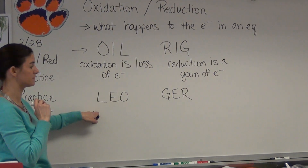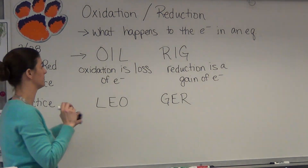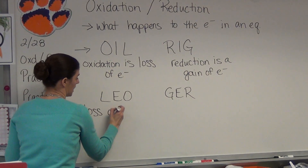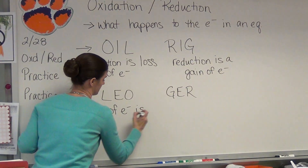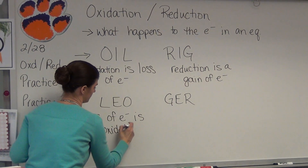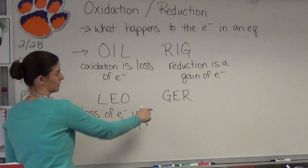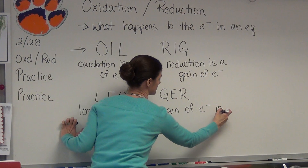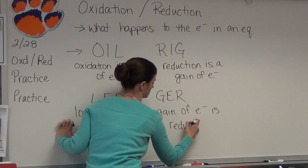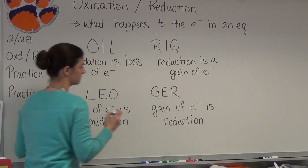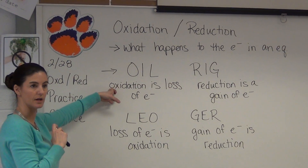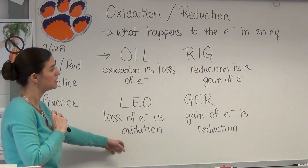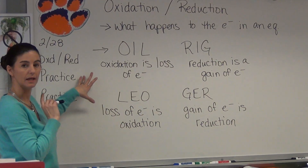If you use the second mnemonic device, LEO the lion says GRR, it's basically the same thing — loss of electrons is oxidation, gain of electrons is reduction. It just depends on whether you want oxidation as your first word or your last word. So we're going to look at what happens to the electrons in a balanced equation.